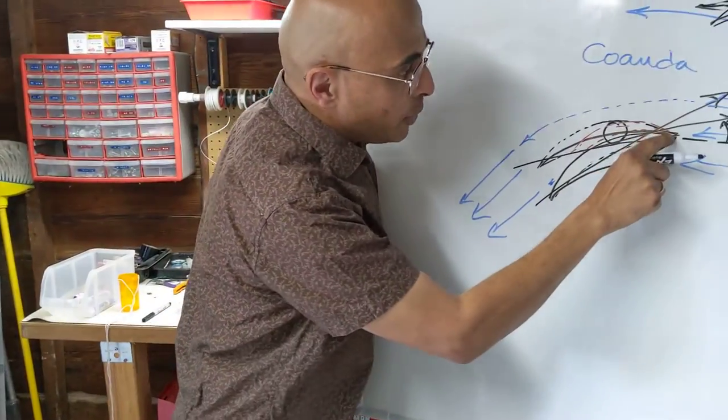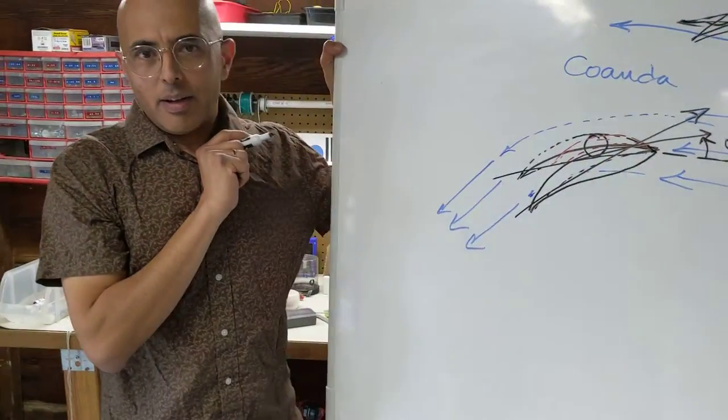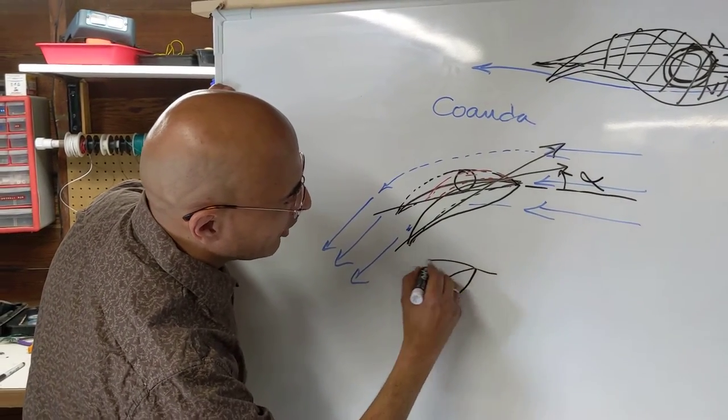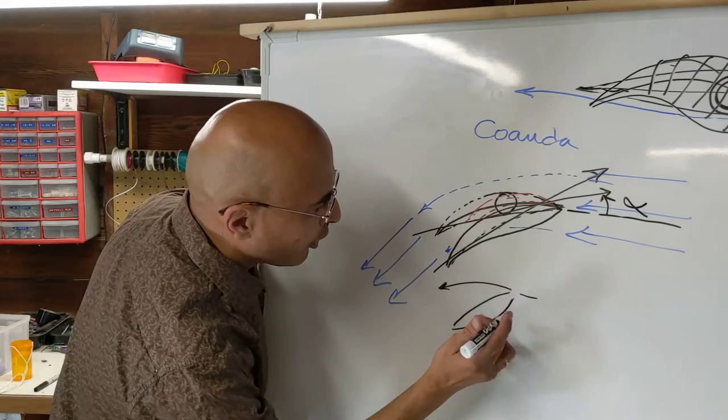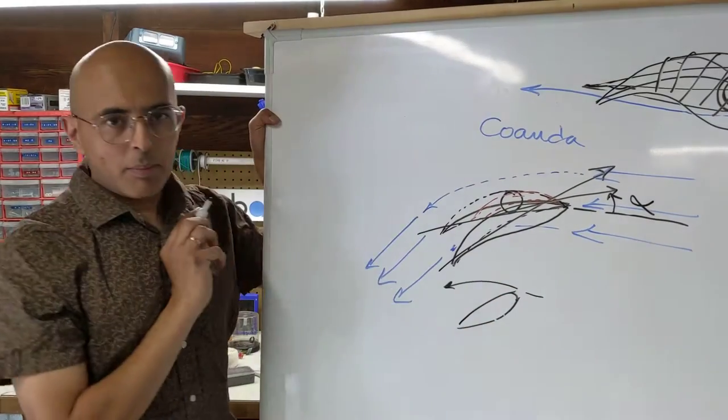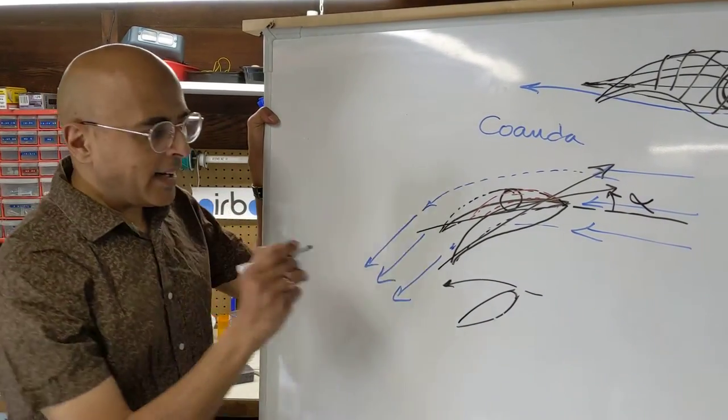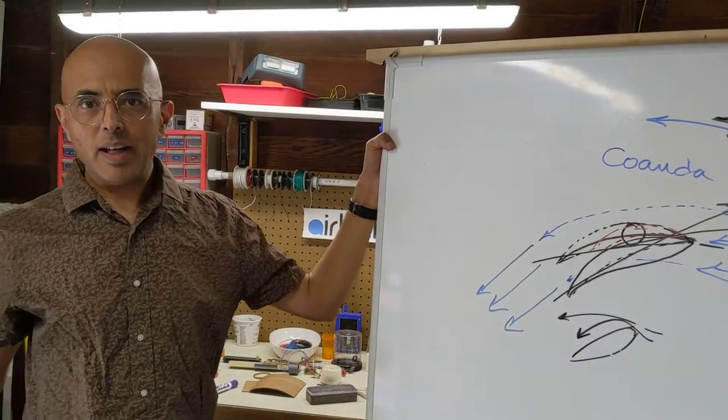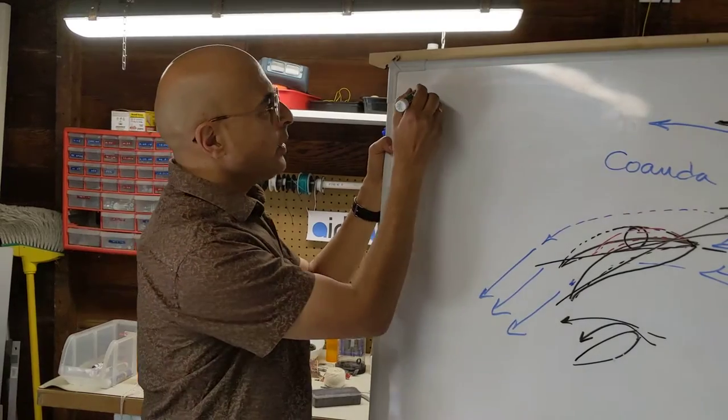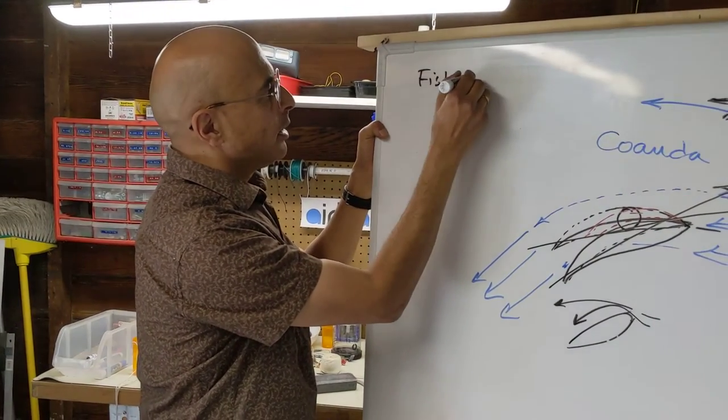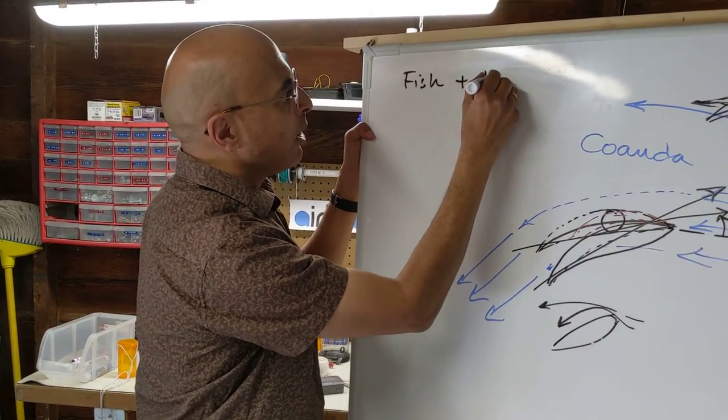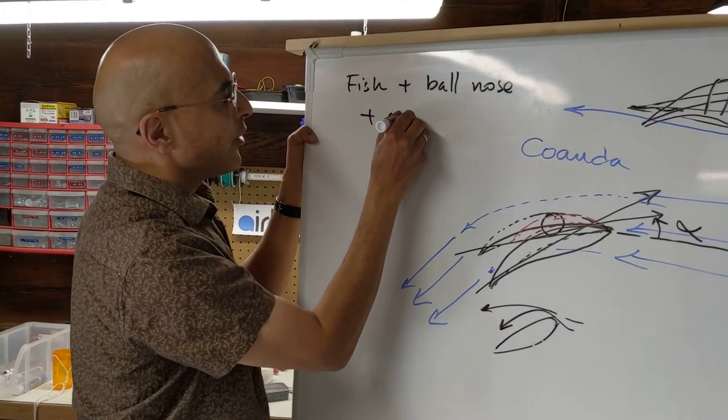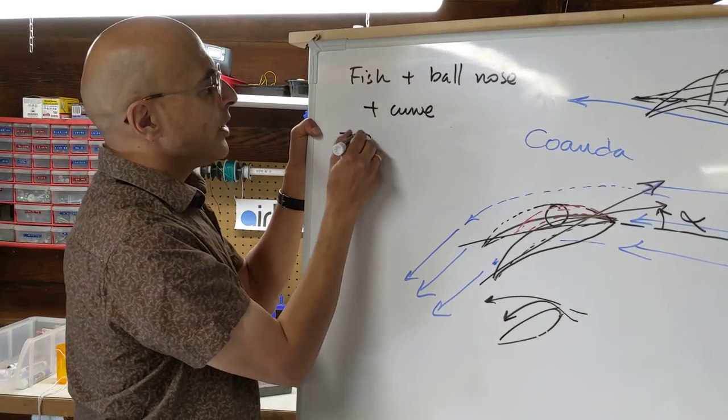Now in order to be able to do that, we can't have a sharp point here, right? Because a sharp pointed thing at an angle to the air, the air is just going to glance off the top. So we have to curve this, the nose of that, and then the air flies smoothly around it at different angles, no matter how you put it into the air. Right.